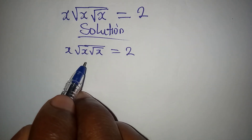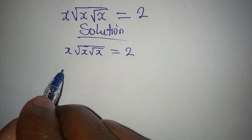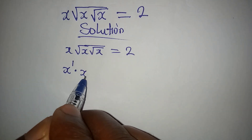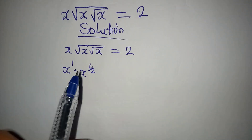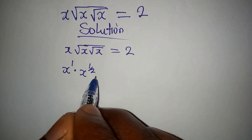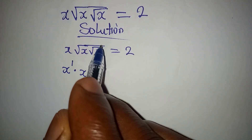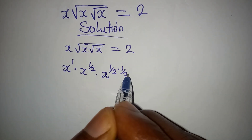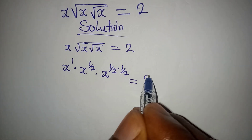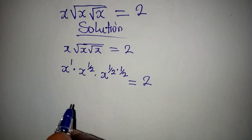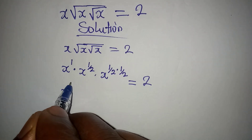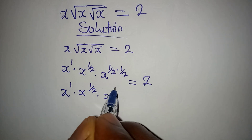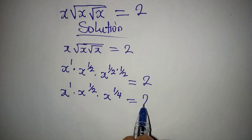This x here is the same as x to the power of 1. Multiply by x to the power of 1/2, because it is under one square root sign. Then this is under two square root signs, so we have x to the power of 1/2 times 1/2. This is equal to 2. So we have x to the power of 1, times x to the power of 1/2, times x to the power of 1/4, and this is equal to 2.